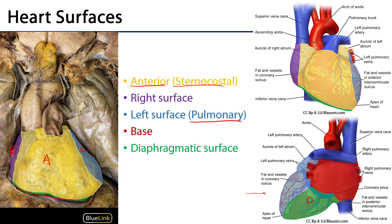Posteriorly, we have the base of the heart. The base is a trapezoidal-shaped region that is largely the left atrium, and we can see the pulmonary veins delivering blood back from the lungs to the heart there. There is also an apex of the heart, pointed inferiorly and left laterally. Roughly two-thirds of the heart's mass lies left of the midline, and one-third to the right.